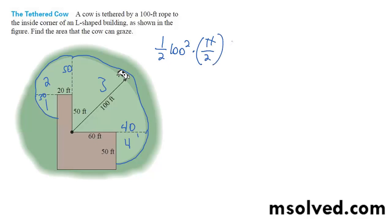And then we have, pretty much all these are 90 degrees, so it's just pi over 2. So plus one half times, so I'll do the number 4, so that's going to be 40 squared times pi over 2.